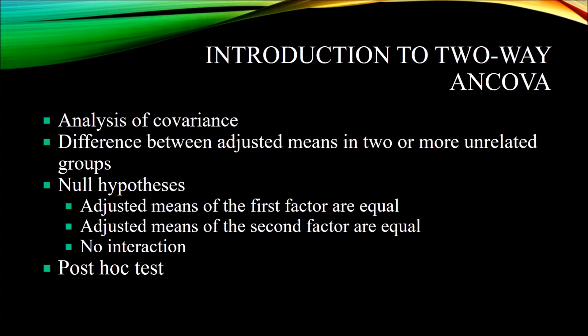This gives us three null hypotheses for a two-way ANCOVA: the adjusted means of the first factor are equal, the adjusted means of the second factor are equal, and there is no interaction between the factors. If one or both of the independent variables has three or more levels, you also need to conduct a post-hoc test after a two-way ANCOVA to determine where the differences are among those levels.